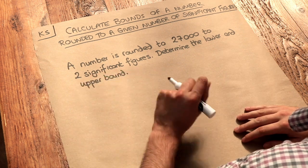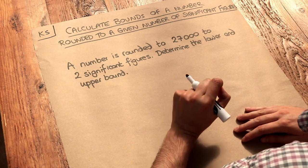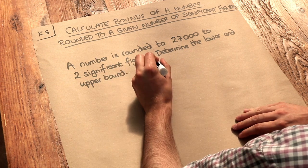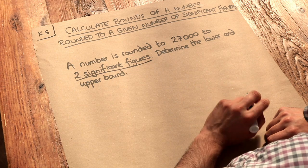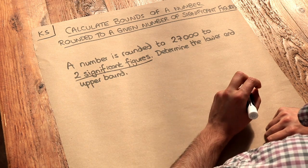Now in previous videos we saw a technique where we could add or subtract half the accuracy, where in this case the accuracy is to the nearest two significant figures, to the original number and that would give us the lower and upper bound.